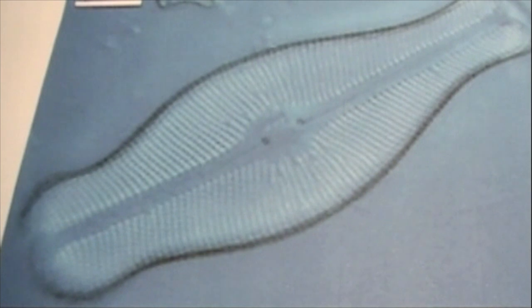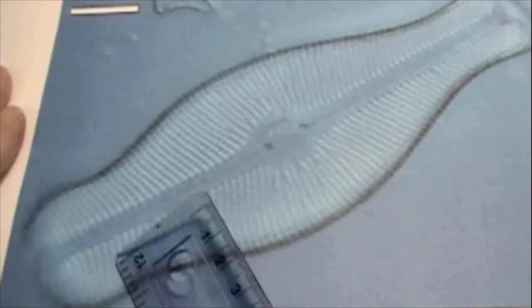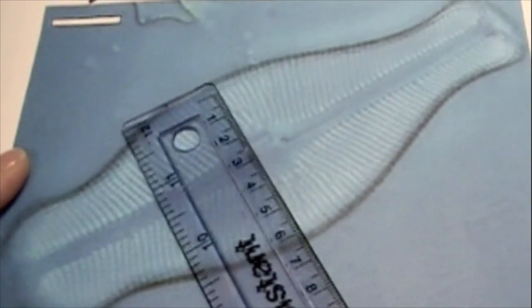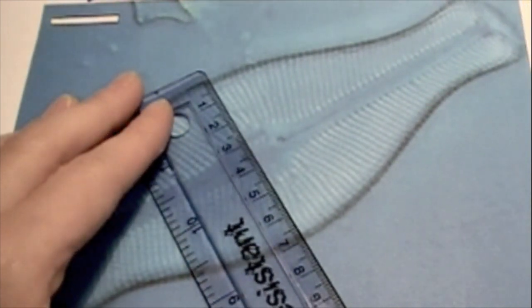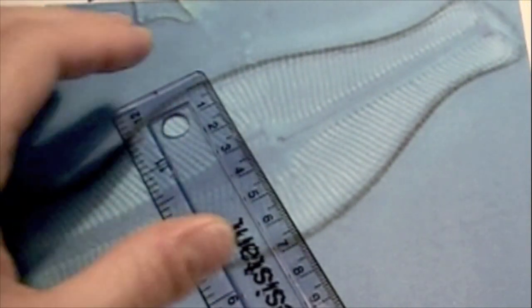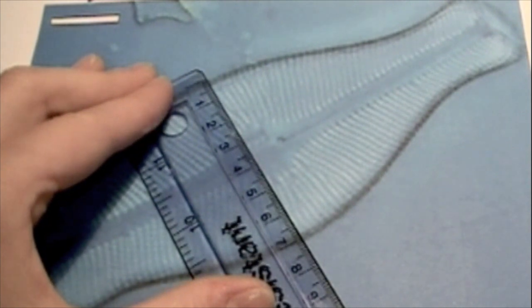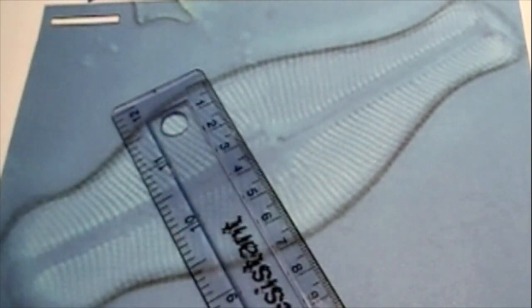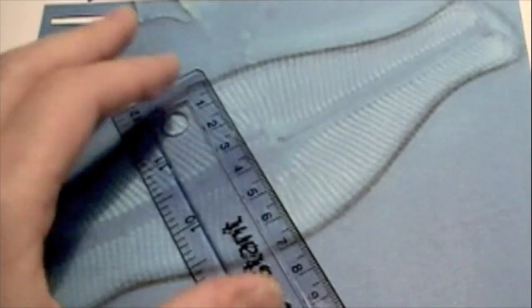Now we can try and calculate the actual specimen width if you like. Let's do the width. So if we measure the width with the ruler, we can run it through and we find that the width is say 7.1 centimeters.